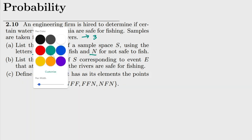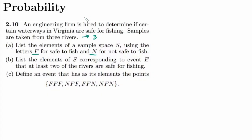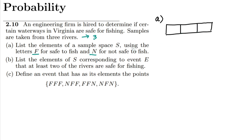This is part A. In part A, we have a window containing space for three elements — why three elements? Because samples have been taken from three rivers. Either those would be safe, denoted by F, or not safe, denoted by N. We have to mention all the combinations corresponding to these three spaces.